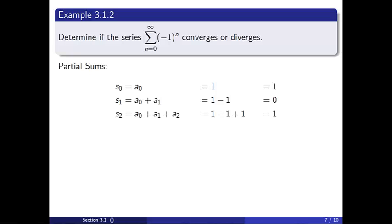s_2 is the sum of the terms up to a_2, 1 - 1 + 1, so s_2 equals 1. s_3, the sum of the terms up to a_3, is 0. By now,